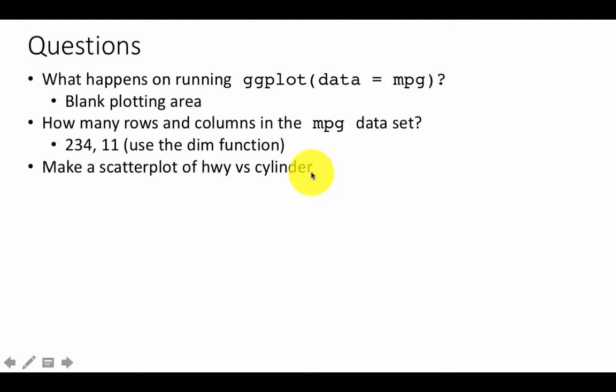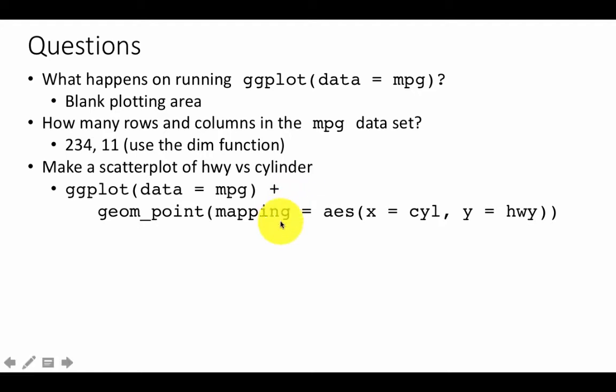Make a scatter plot of highway versus cylinder. Of course, in here, I'm talking about make a scatter plot using ggplot. So you take a look at the command from the previous slide. You'll be able to do it very easily. So just change the x and y. That's all we need to do. Earlier, we had different x and y, but now highway versus cylinder. And I'm assuming we want the cylinder on the x-axis and highway on the y-axis. Let's say that's what it is. So you plot it, and that's what you get.